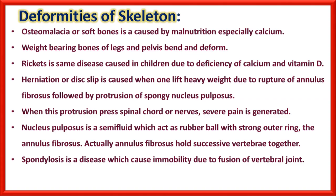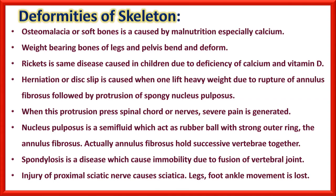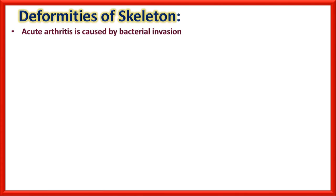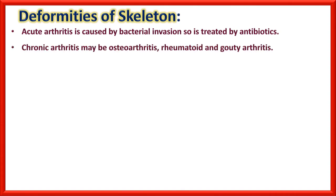Spondylosis is a disease which causes immobility due to fusion of vertebral joints — when vertebral columns stick together and cannot bend, movement is restricted. Injury to the proximal sciatic nerve causes sciatica, with loss of leg, foot, and ankle movement. Acute arthritis is caused by bacterial invasion and is treated by antibiotics — the only bone disease treated with antibiotics. Chronic arthritis may be osteoarthritis, rheumatoid arthritis, or gouty arthritis.